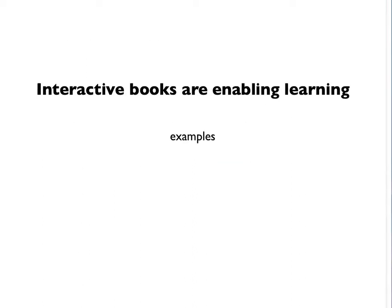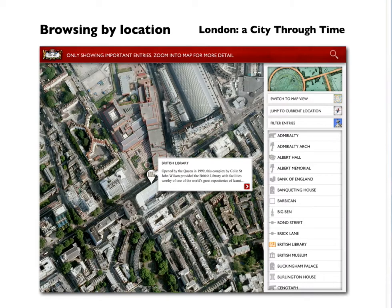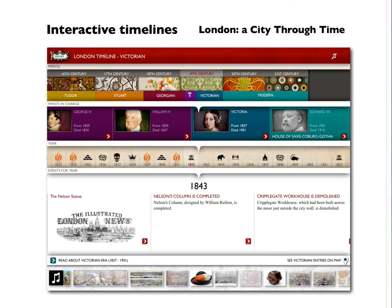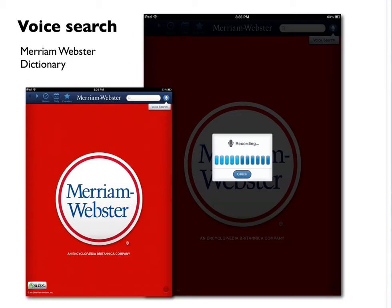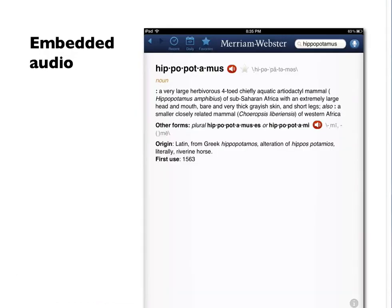The future of reading really is already here, and I'd like to show you a few examples of how these interactive books are enabling learning — they're not just all hype and glitz. In this app, London: A City Through Time, you can browse by location, and there are beautiful embedded interactive timelines. In the Merriam-Webster dictionary, you can search by voice, or you can hear how a word is pronounced.